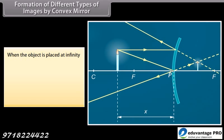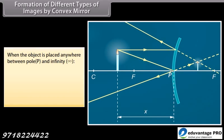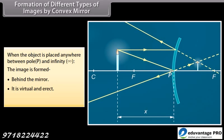Formation of different types of images by convex mirror. When the object is at infinity, the image is formed behind the mirror — virtual, erect, and smaller than the object. When the object is placed anywhere between pole P and infinity, the image is also formed behind the mirror — virtual, erect, and smaller than the object.